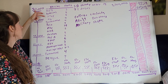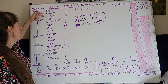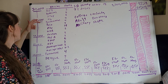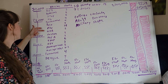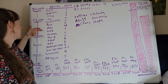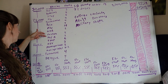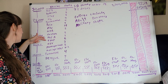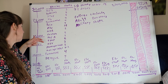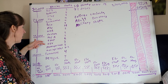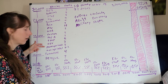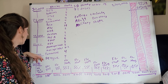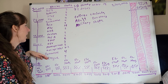On the CDC childhood schedule we have: hepatitis B, rotavirus, DTaP, Hib, pneumococcal, polio, flu, MMR, chickenpox (varicella), Hep A, Tdap, HPV, meningococcal, and some other meningococcal variant, pneumococcal, and dengue. DTaP is a series of five, pneumococcal a series of four. I put 18 for the flu shot because they're supposed to get one every year.